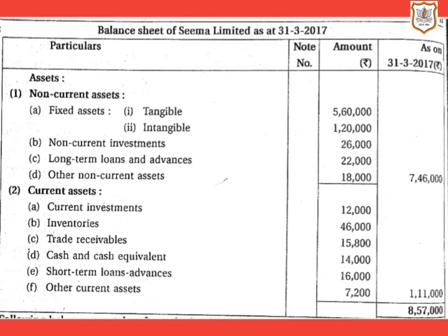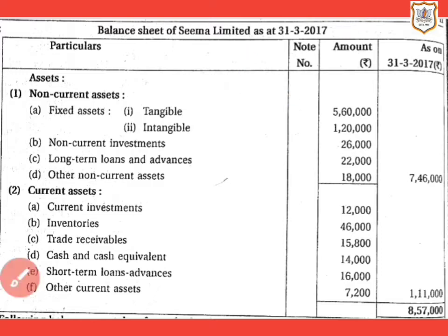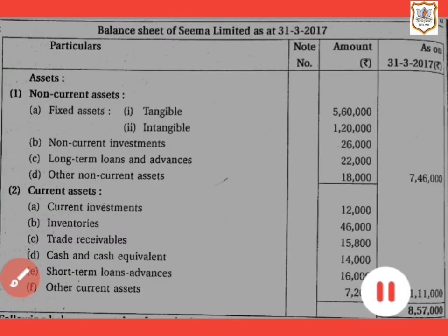First of all, we will write the headings. As I explained in the format, we have to prepare columns: the first column will be for particulars where we will write all the contents, and then the note number column, followed by the amount column.